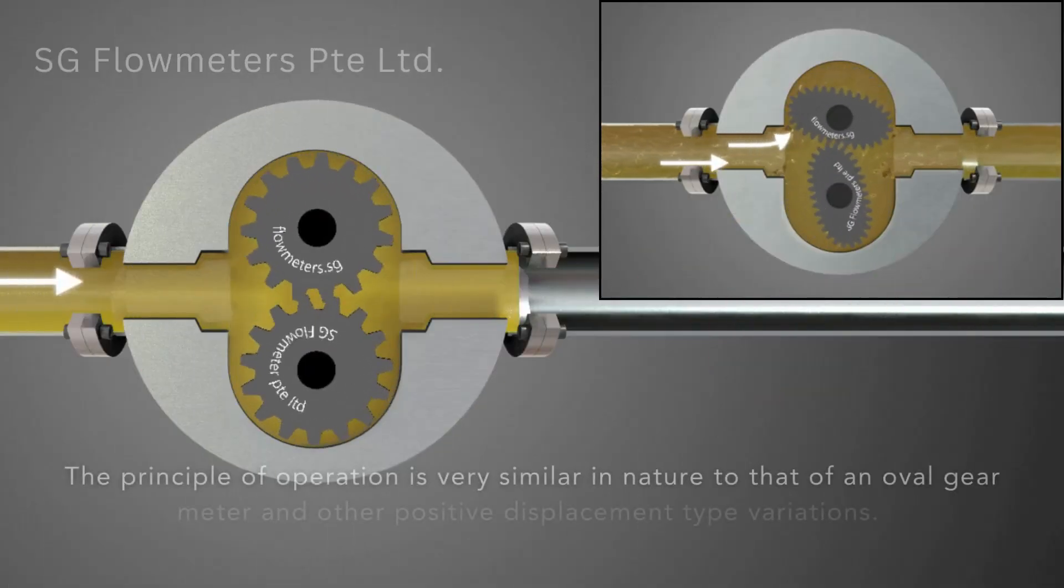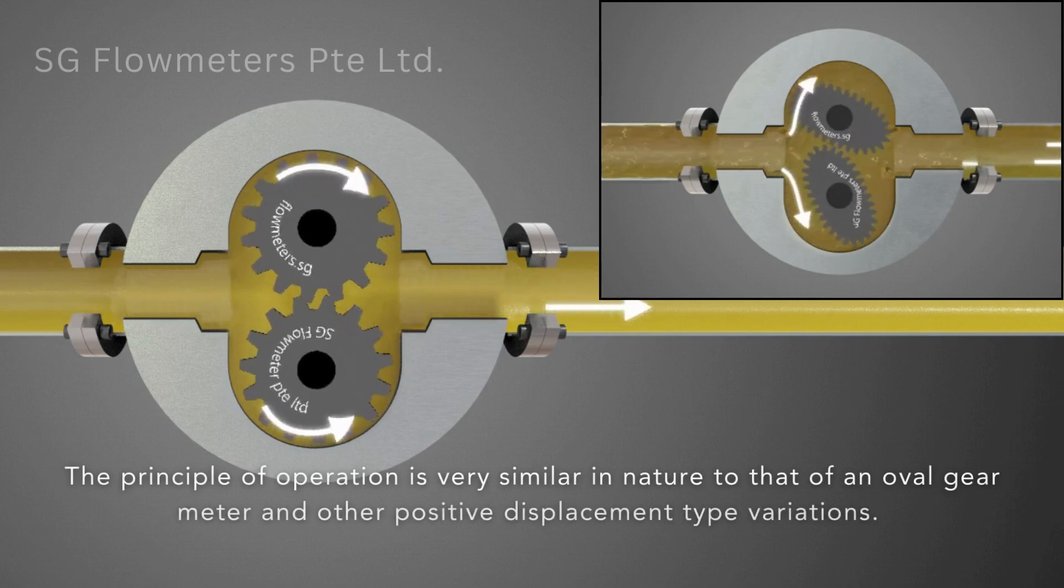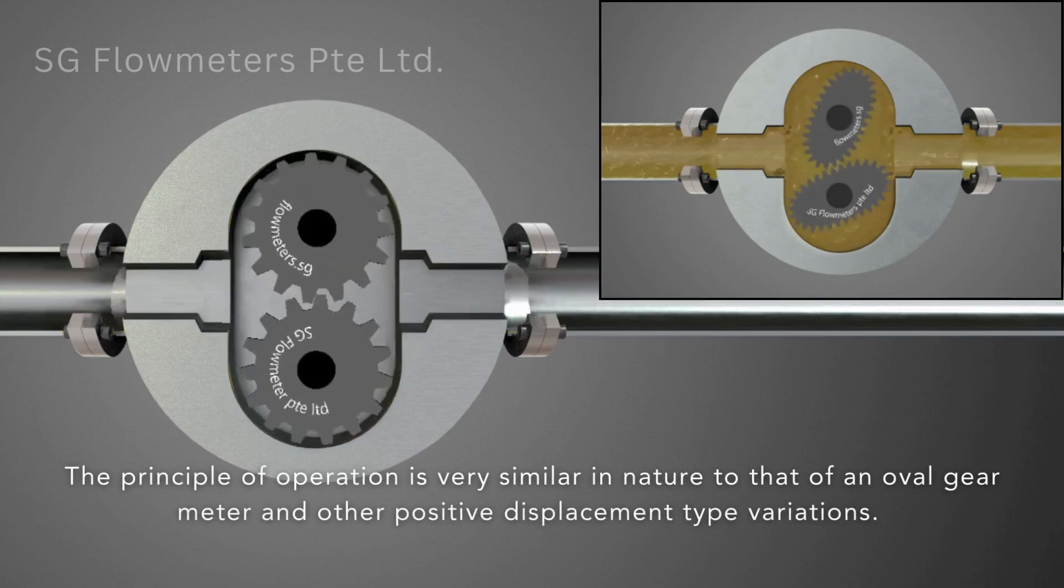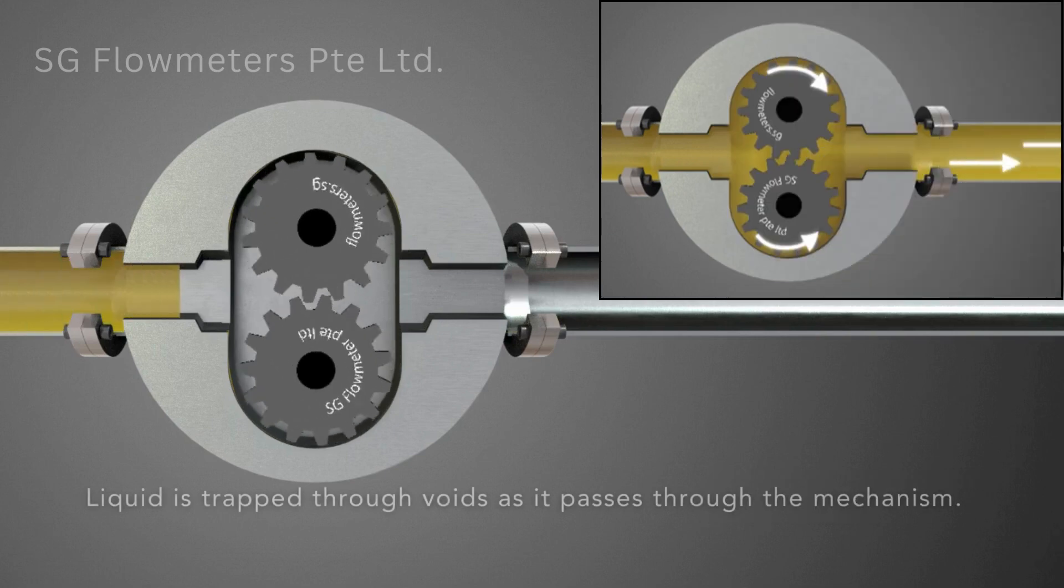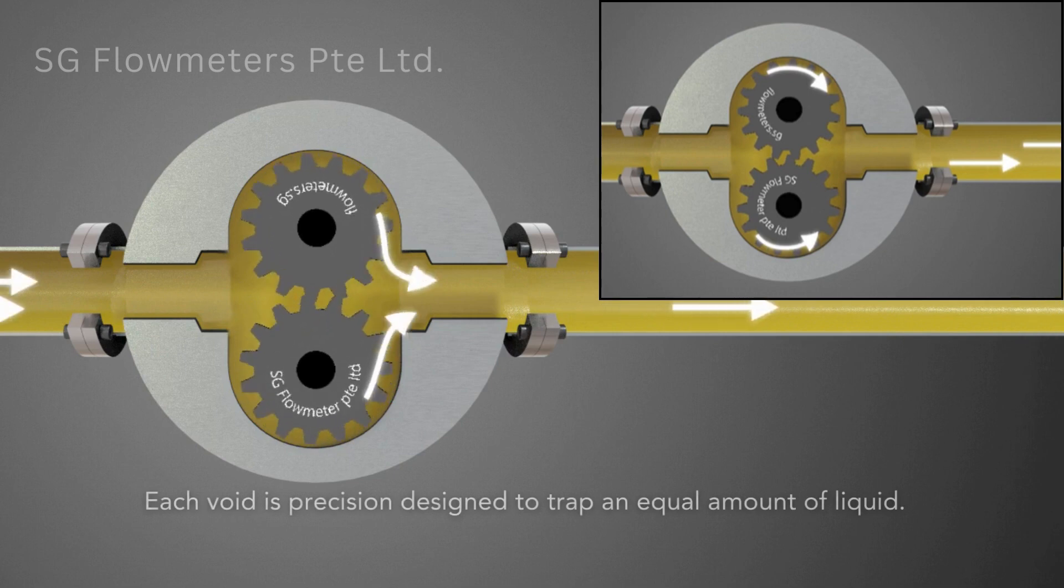The principle of operation is very similar in nature to that of an oval gear meter and other positive displacement type variations. Liquid is trapped through voids as it passes through the mechanism. Each void is precision designed to trap an equal amount of liquid.